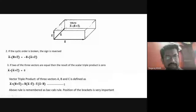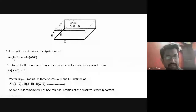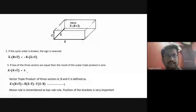If two among the three vectors are equal, then the result of the scalar triple product will be zero. That is, if a bar equals b bar, then a bar dot of (a bar cross c bar) equals zero. If among the three vectors, two vectors are equal, then the result of the scalar triple product is zero.